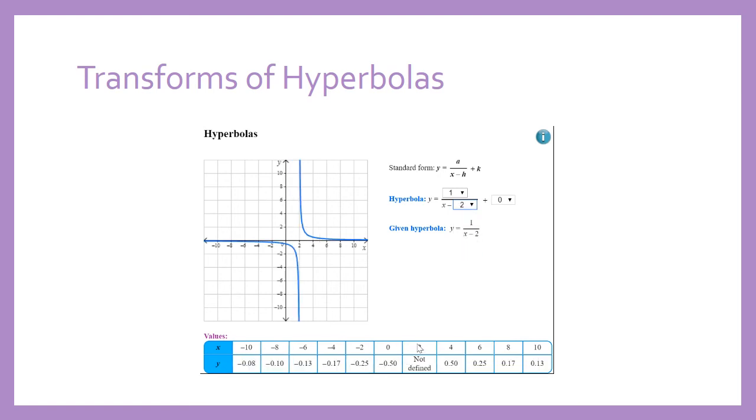So if we make it two, we can see our asymptote is at two. And if we make h a negative number, one over x plus one, that moves it the other way. And here, x cannot be negative two, because negative two plus two is zero. So that's how we apply the transformations to some hyperbolas.